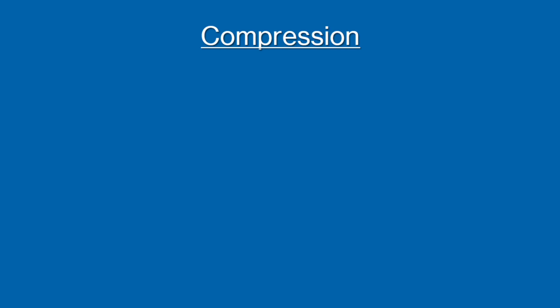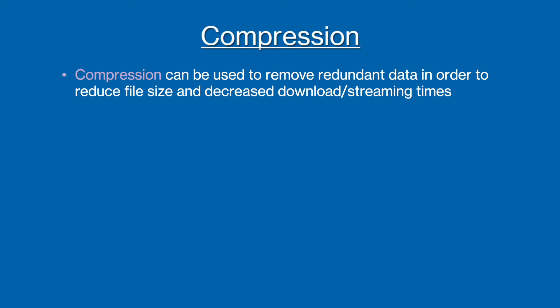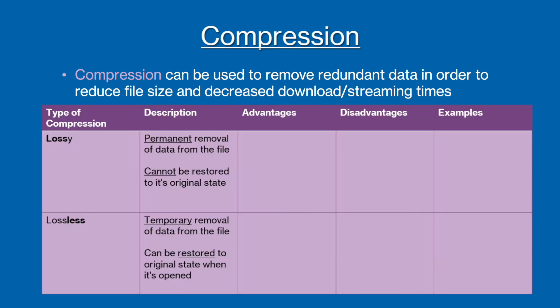As sound and image files can be quite large and take up a lot of space within a computer's memory, compression is often used to remove redundant data in order to reduce the size of the file. There are two types of compression and the first is called lossy compression. This is the permanent, non-reversible removal of data from the file. The advantage of this is that the file size is greatly reduced, which means that files can be loaded much quicker.